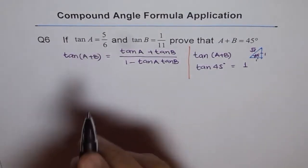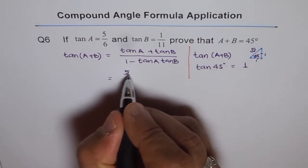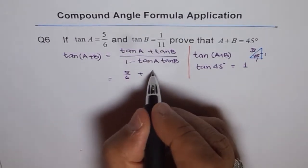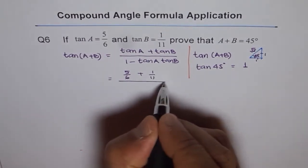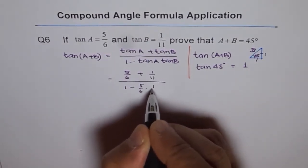Now tan A is given to us as 5 over 6. So let's replace this by 5 over 6 plus tan B is 1 over 11 divided by 1 minus tan A which is 5 over 6 times 1 over 11.